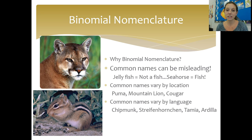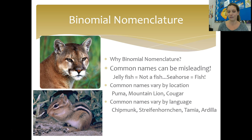Let's talk about the naming system he created — binomial nomenclature. Why do we need a universal naming system for organisms? First, because common names can be really misleading. For example, a jellyfish is not a fish, but a seahorse is a fish. Common names also vary by location — this big cat might be called a puma, a mountain lion, or a cougar, but they're all the same animal.